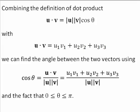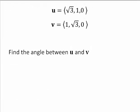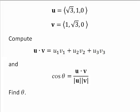Combining the definition of dot product with the component formula, we can find the angle between two vectors. We will compute u dot v, and we will compute the magnitude of u and the magnitude of v. Then we will find the ratio u dot v divided by the product of the magnitude of u times the magnitude of v, and from there we will find theta.